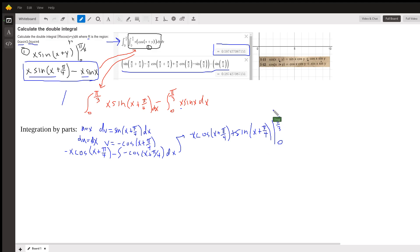Now I have to take these limits of integration and substitute it in for x. So I get minus pi over 3 times the cosine of pi over 3 plus pi over 4 plus the sine of pi over 3 plus pi over 4. And then I have to put zero in for x and do a subtraction.